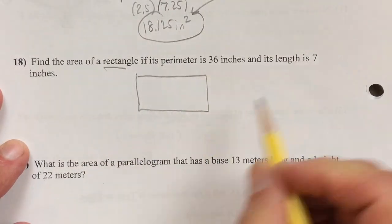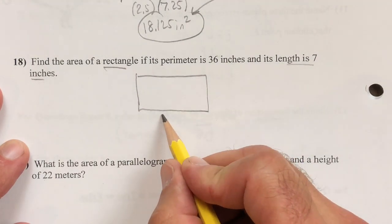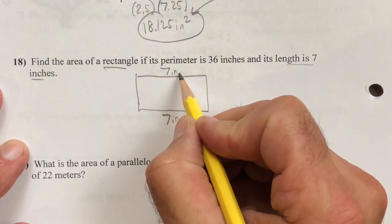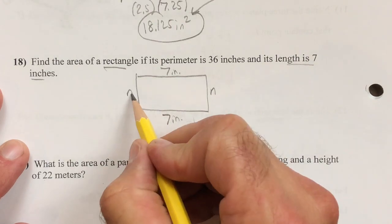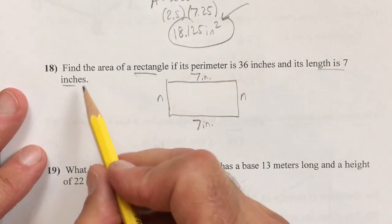And number 18, a great idea for a problem like this is to make a sketch of what you already know. So you have a seven inch side. So you have two of those. And you have a side that we don't know. So we'll call those n.